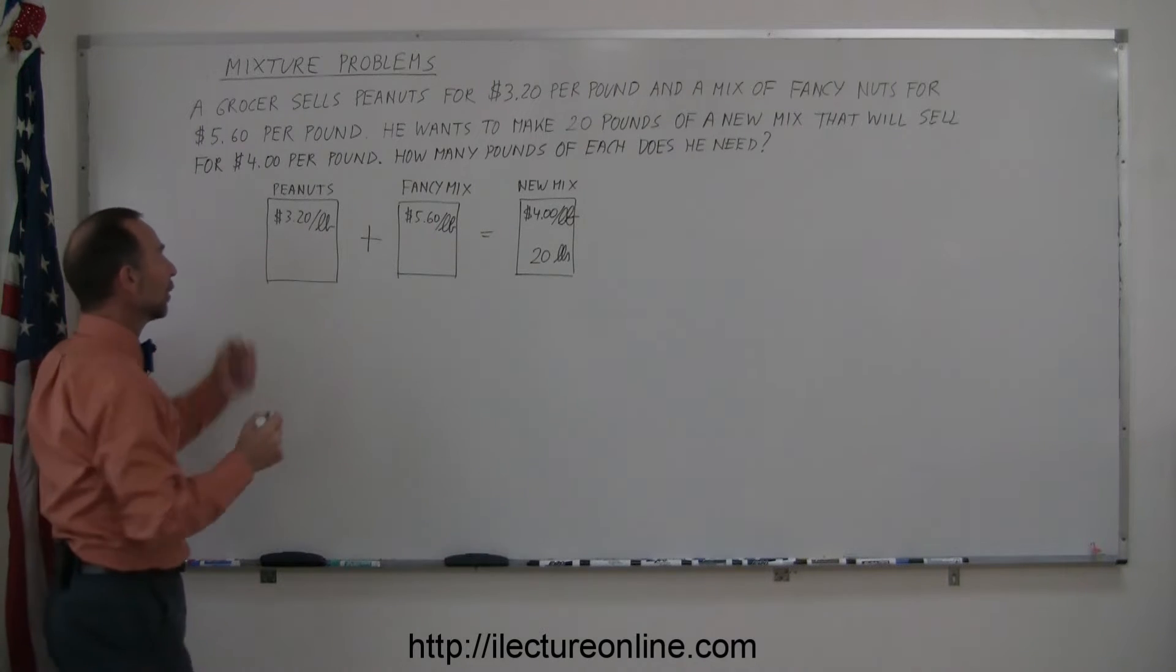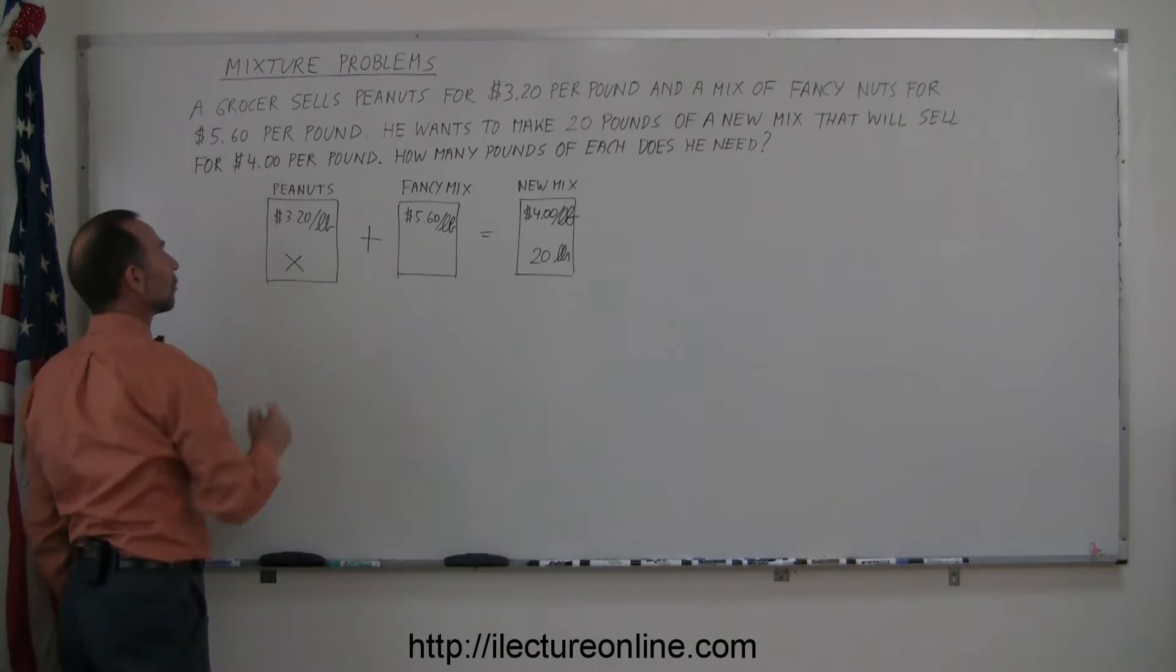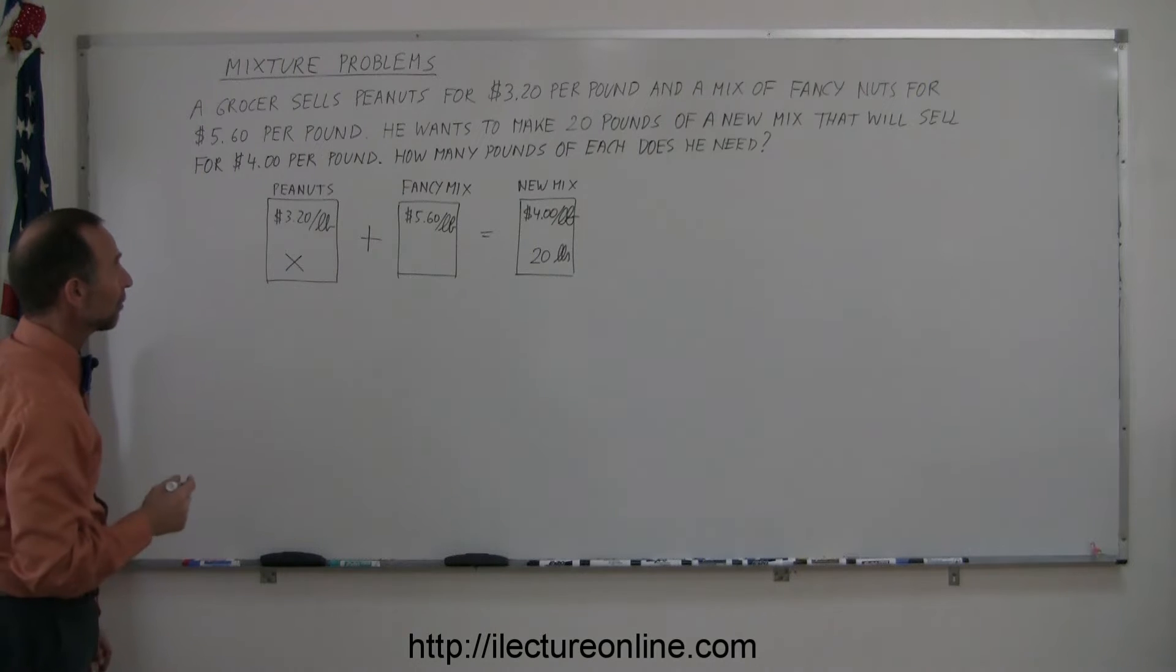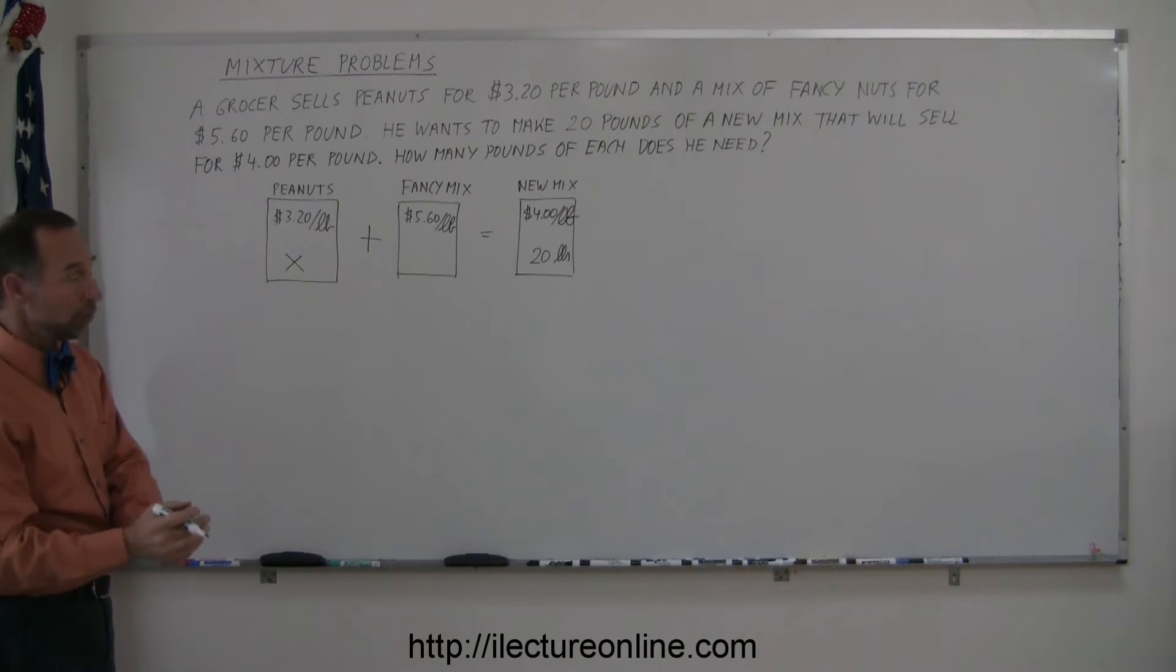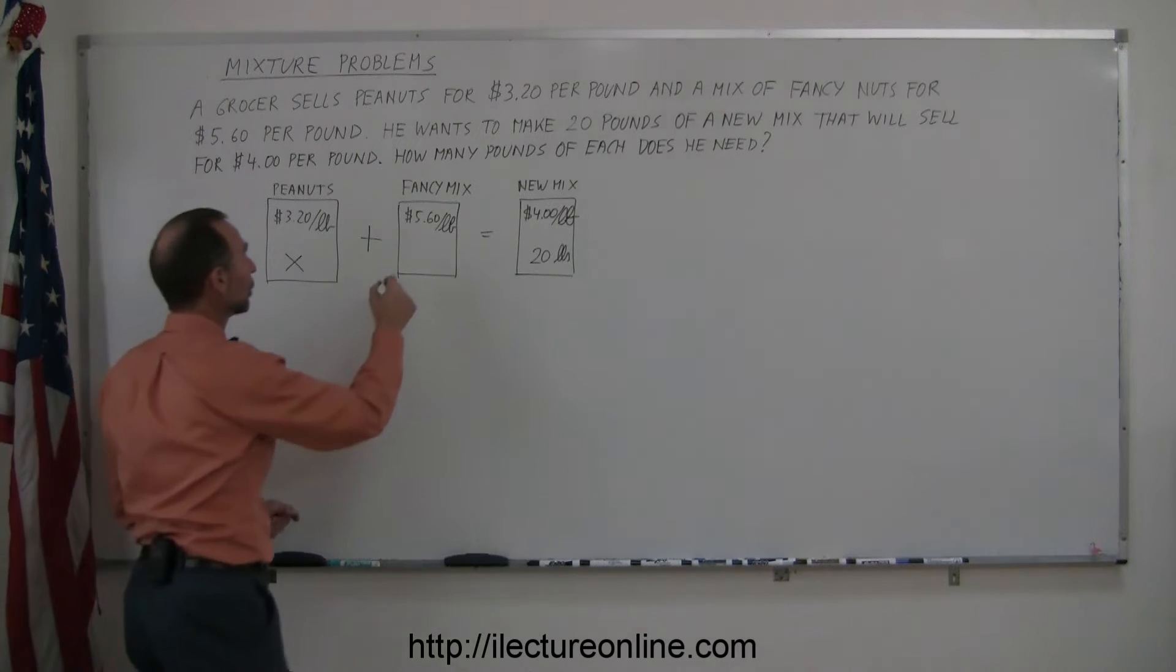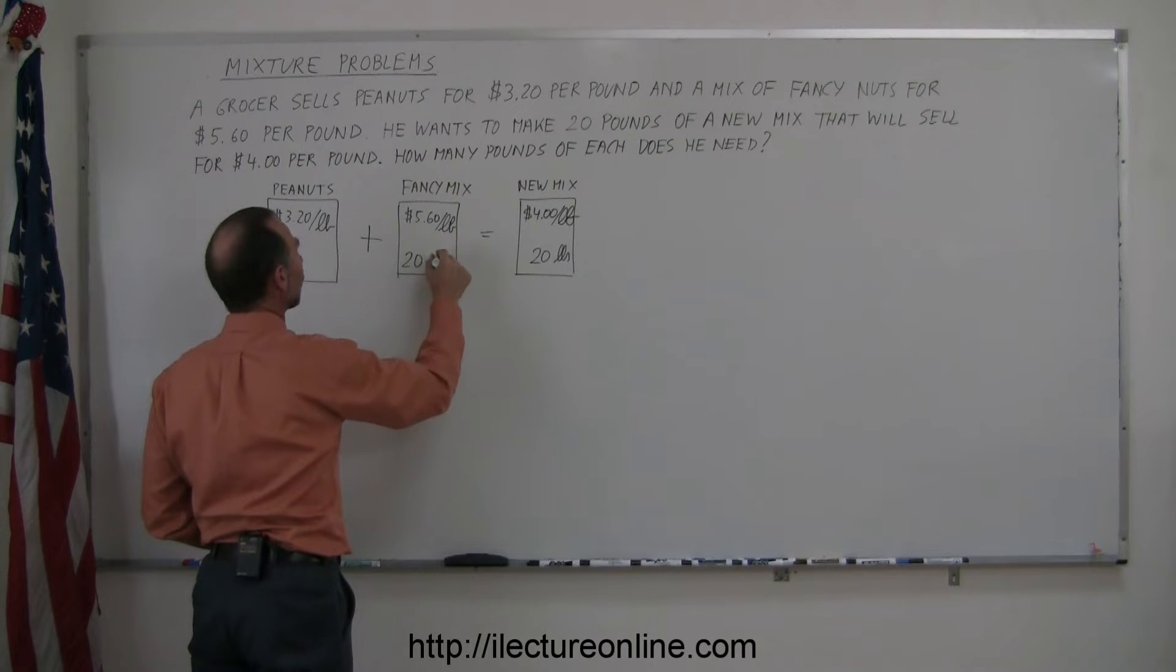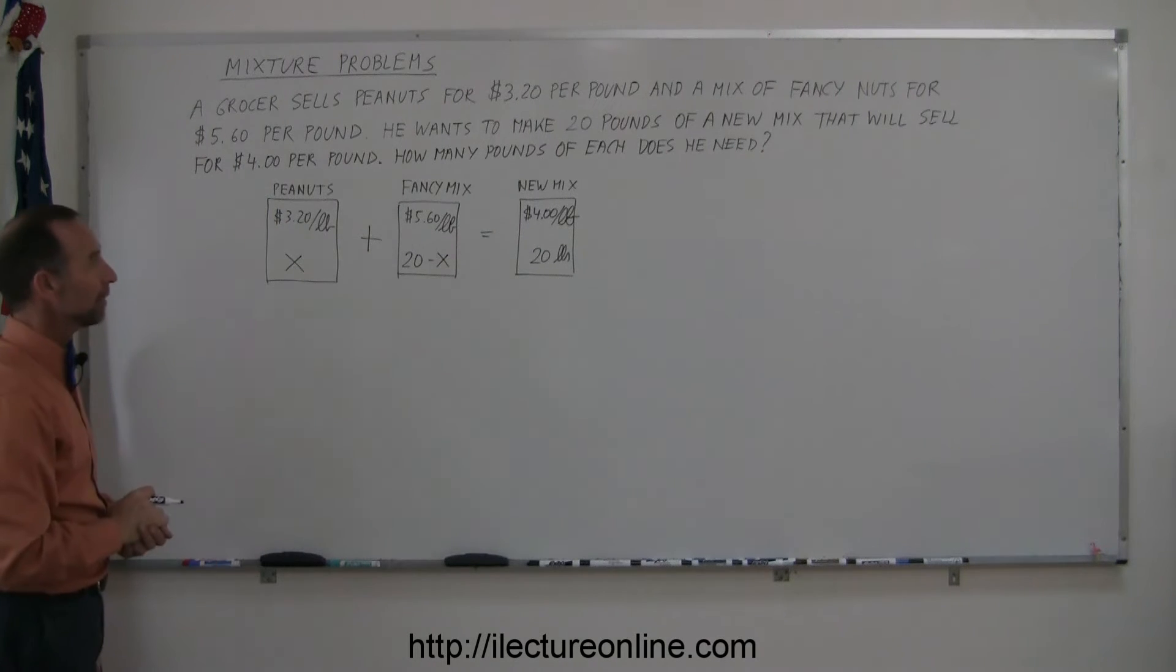How many pounds do we need of the peanuts? We don't know. Let's call it X. The remainder will have to be made up from the fancy mix. So the total, 20 minus X, will give us the number of pounds for the fancy mix.